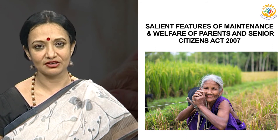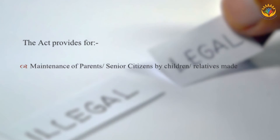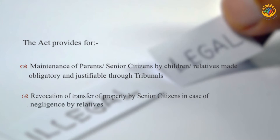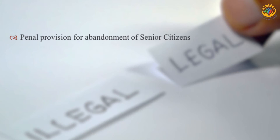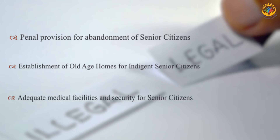Now let us know about the salient features of the Maintenance and Welfare of Parents and Senior Citizens Act, 2007. This act was meant to ensure needs-based maintenance for parents and senior citizens and their welfare. The act makes maintenance by children or relatives obligatory and justiciable through tribunals, allows revocation of transfer of property by seniors in case of neglect, includes penal provisions for abandonment of senior citizens, mandates establishment of old age homes for indigent senior citizens, and ensures adequate medical facilities and security.